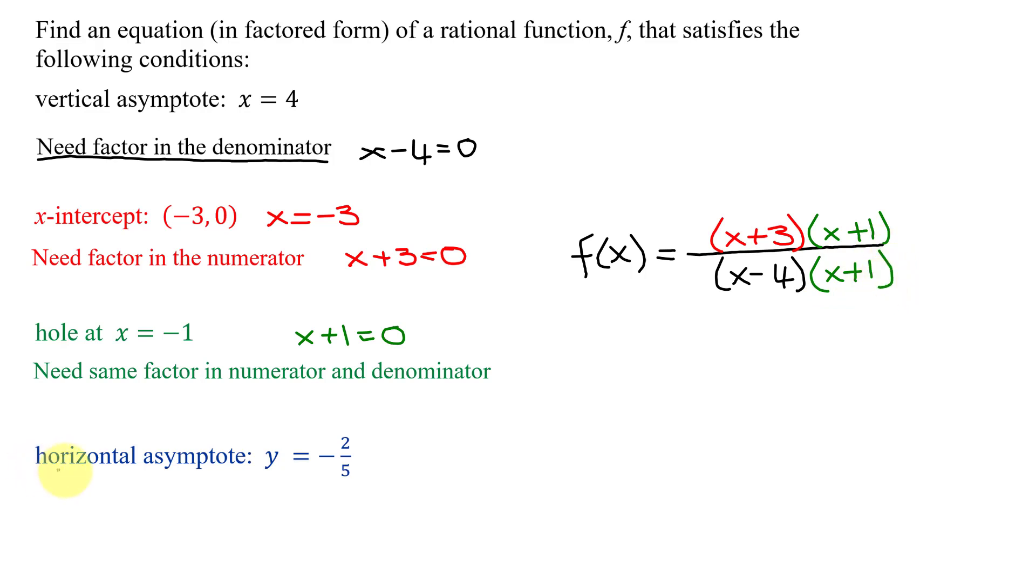And lastly, I know the horizontal asymptote has the equation y equals negative 2 fifths. With horizontal asymptotes, there are two cases. One, where the degree of the numerator is less than the degree of the denominator, that gives you an equation of y equals 0. But if we get an equation of y equals a constant other than 0, that is the case where we need the degree of the numerator and the denominator to be the same.